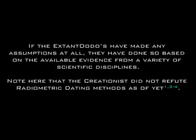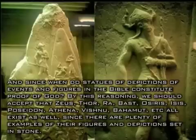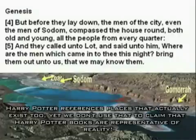Now, about your assumption that the age of the earth is billions of years. If the Extant Dodos have made any assumptions at all, they have done so based on the available evidence from a variety of scientific disciplines. Note here that the creationist did not refute radiometric dating methods as of yet. When we take all the historical and cultural information and compare that with scientific information, it all verifies the Bible. Care to provide a source for your claim? Not to mention that this is also completely absurd, as we'll see shortly.